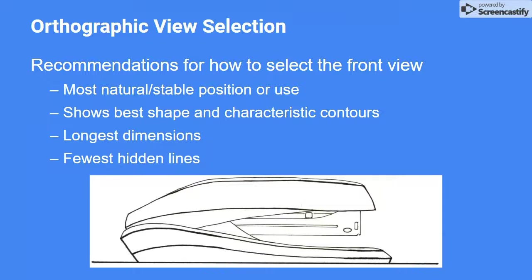Here are a few guidelines that you can use when choosing the best front view for your object. The front view should show the object in its most natural or stable position. It should show the best shape or characteristic contours of the part. This should typically be the longest dimension of the part, which helps ensure that the views will all fit on the page after being rotated. And the front view should show as few hidden lines as possible.